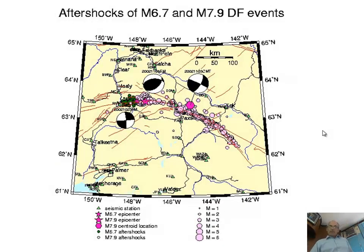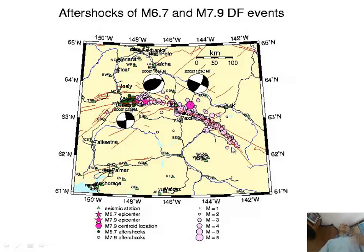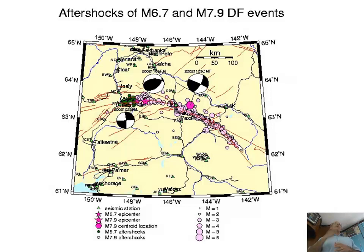This earthquake started with a foreshock on a thrust fault on the west side — about magnitude 6 — and then ruptured along the Denali fault. What was really important is that it ruptured along the main Denali fault, but then the rupture jumped to another fault — the Totunda fault. So sometimes names are just semantics. The earthquake didn't care. It said, 'I want to go this way.' Just names are semantics, and something important happened at that transition.